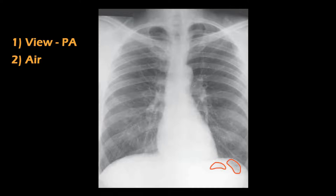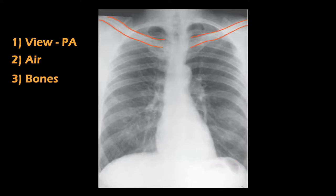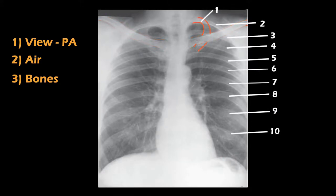Now coming to B, that is bones. Let's label all the major bones seen here. These are the two clavicles. These are the ribs, seen very clearly — this is the first rib, the second rib, and so on. Remember, these parts we see are the posterior parts of the ribs. They are seen prominently because they contain more calcium, hence they block more x-rays and cast a better image than the anterior parts of the ribs.